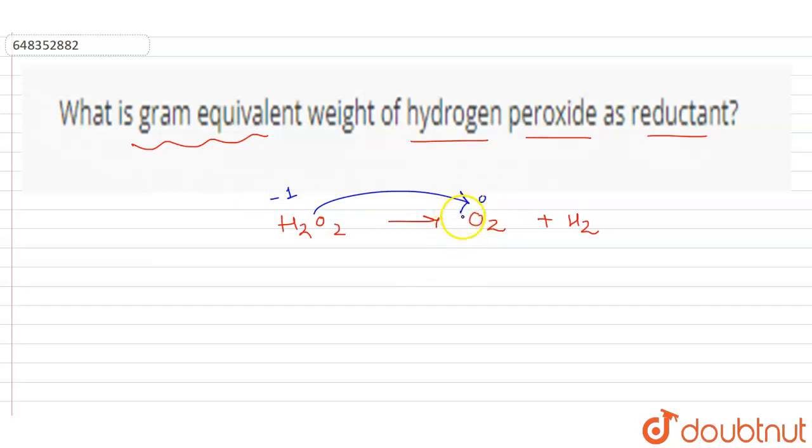As a reductant, hydrogen peroxide is oxidized to oxygen, and we have to calculate the change in oxidation number.